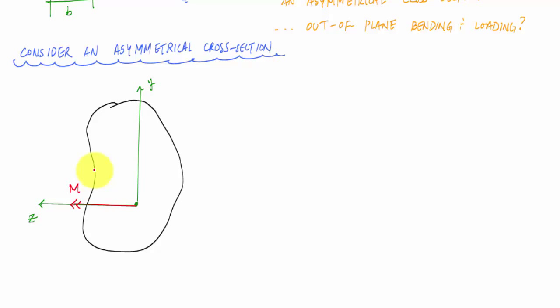My moment is applied as before. The only difference is that my cross-section now is some random arbitrary thing. All right, so let's consider this asymmetrical cross-section with this moment applied, and let's say that this moment is applied on the Z axis, is rotating about the Z axis, and the Z axis also represents the neutral axis.